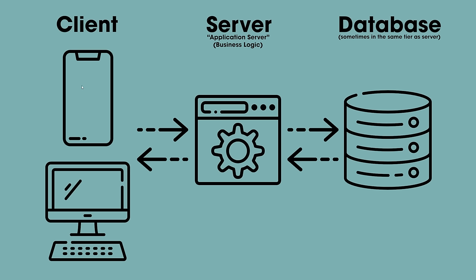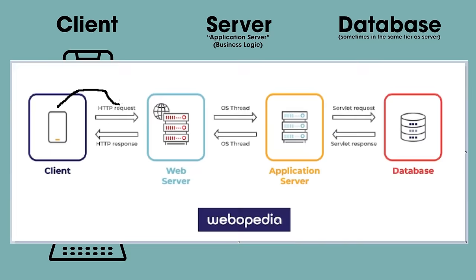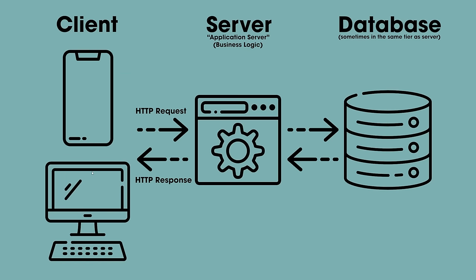So on the client side, as you interact with the web application, it'll send an HTTP request to the server — the business logic — which will then query the database if needed, which will respond with that data, and then we'll transform that data as needed to send an HTTP response back to the client. By strict definition, a web server is a subset of an application server, so all of that occurs in our server tier.